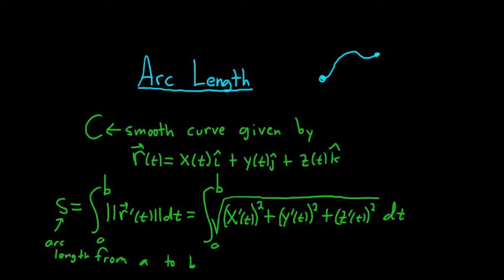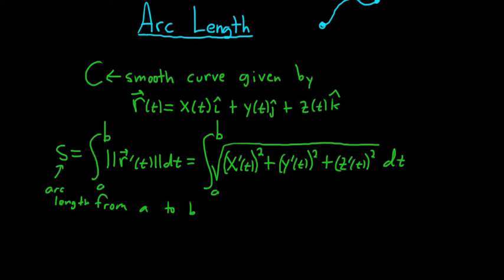So this is the arc length of this curve from a to b. If you think of it as a curve in space, it would actually be the arc length from the point x of a, y of a, z of a to the other point, which would be x of b, y of b, z of b. So it's the length of the arc from these two points in space.